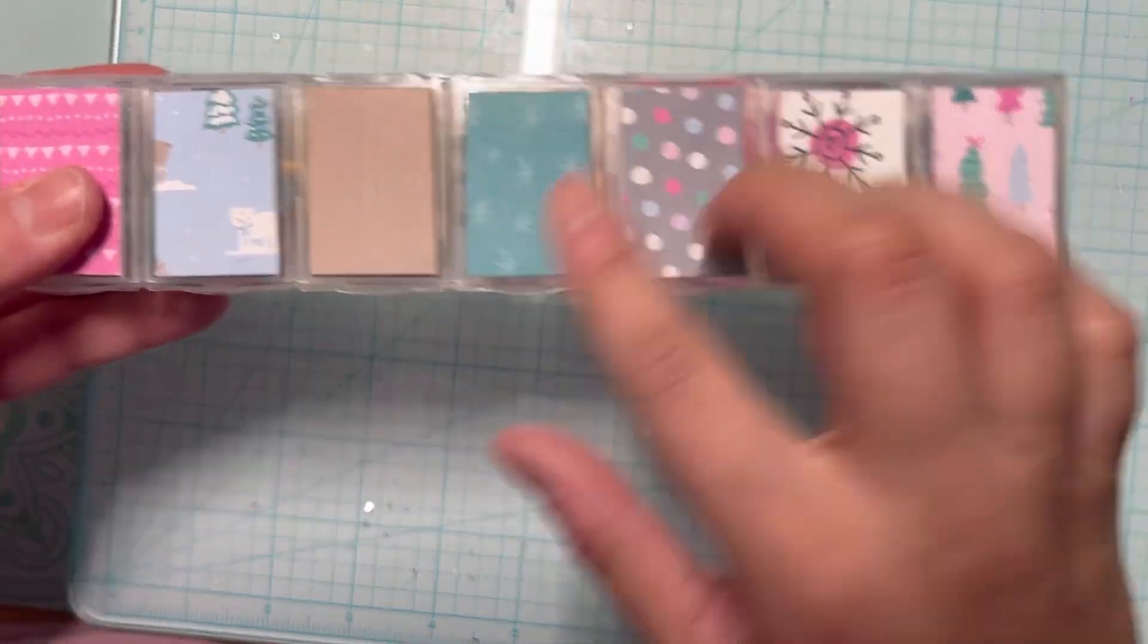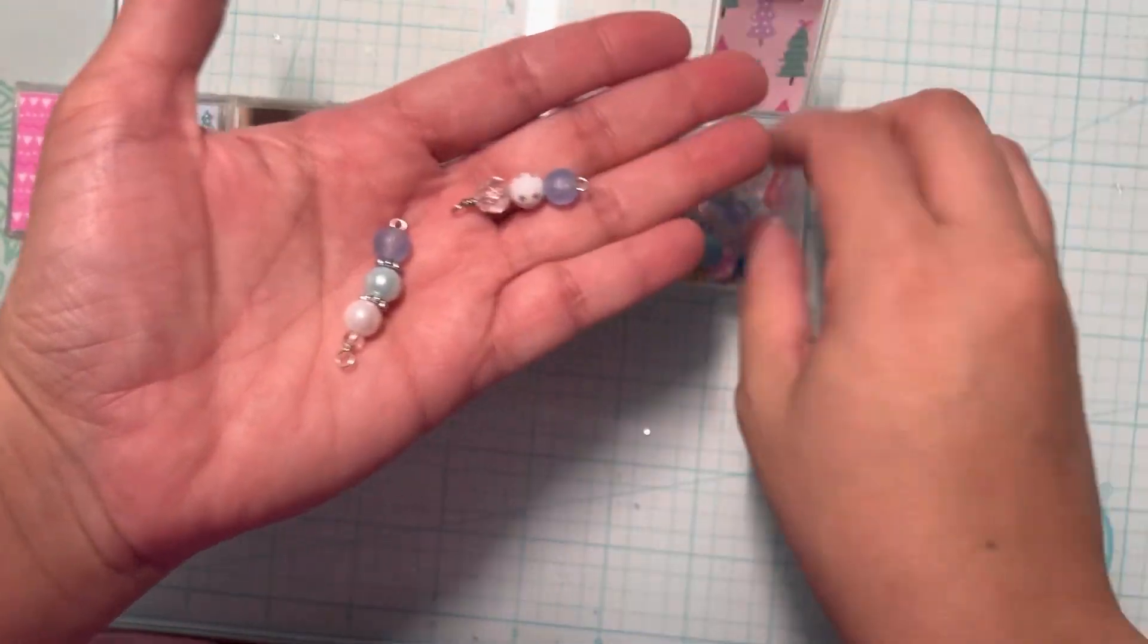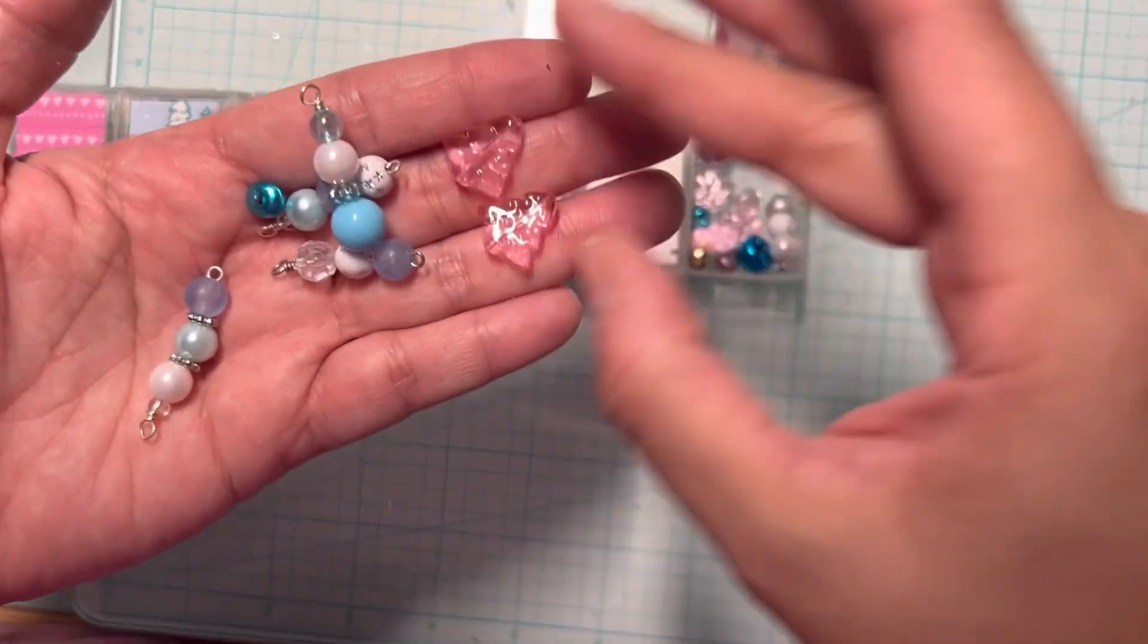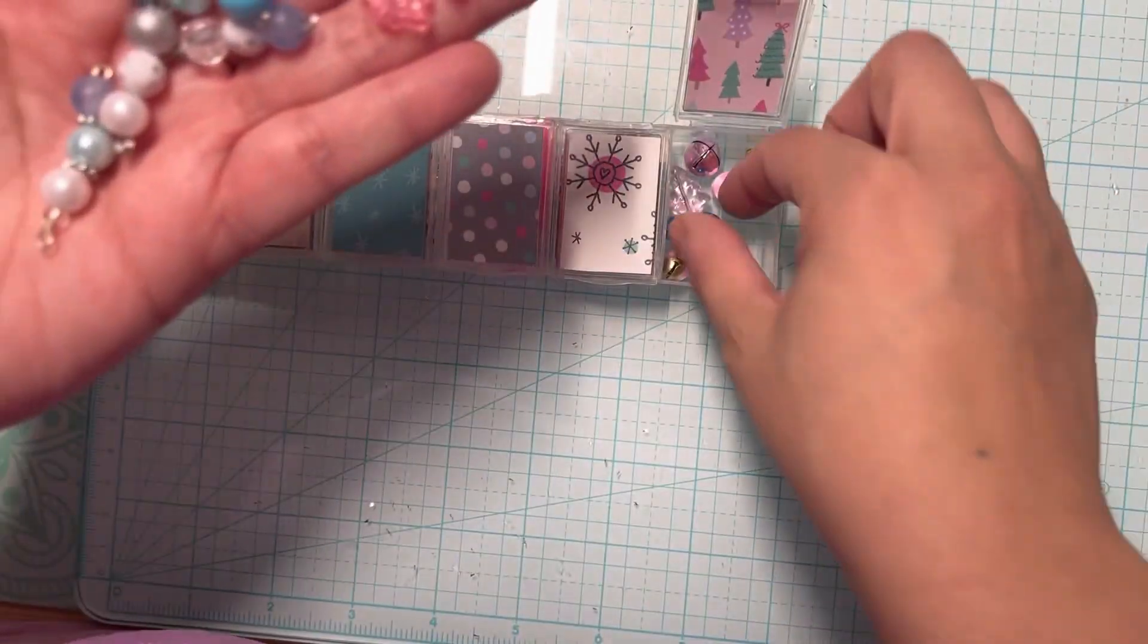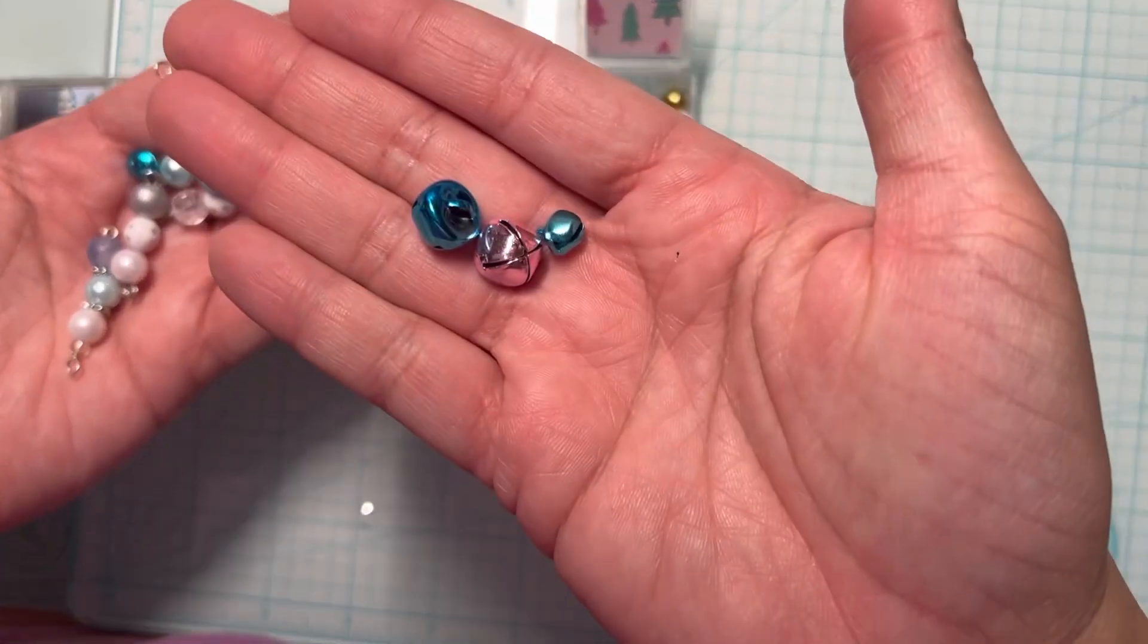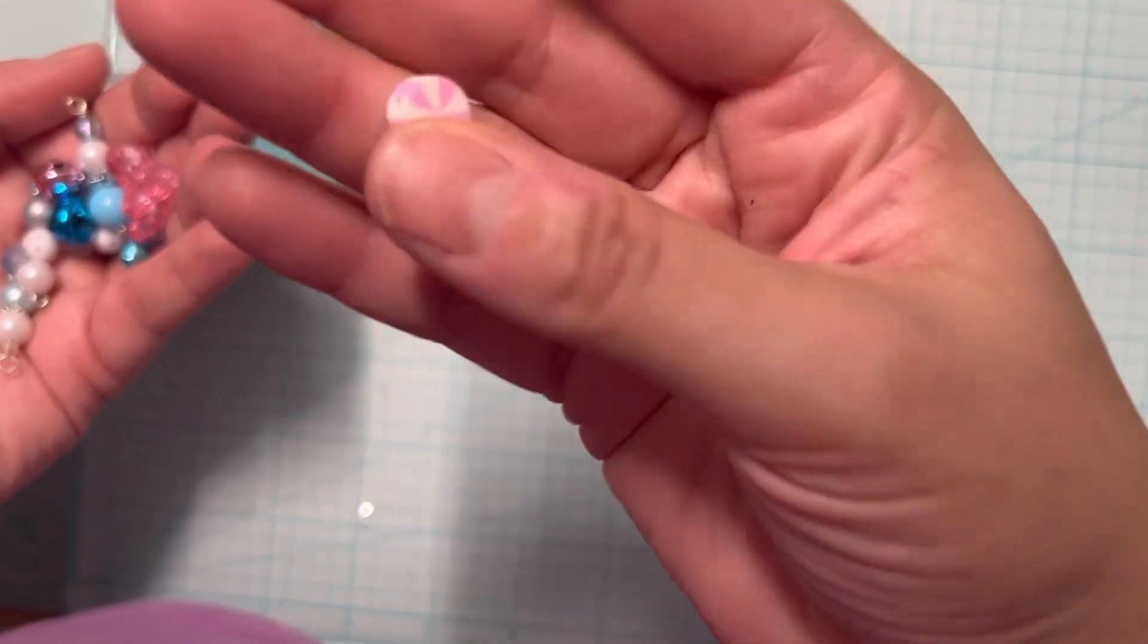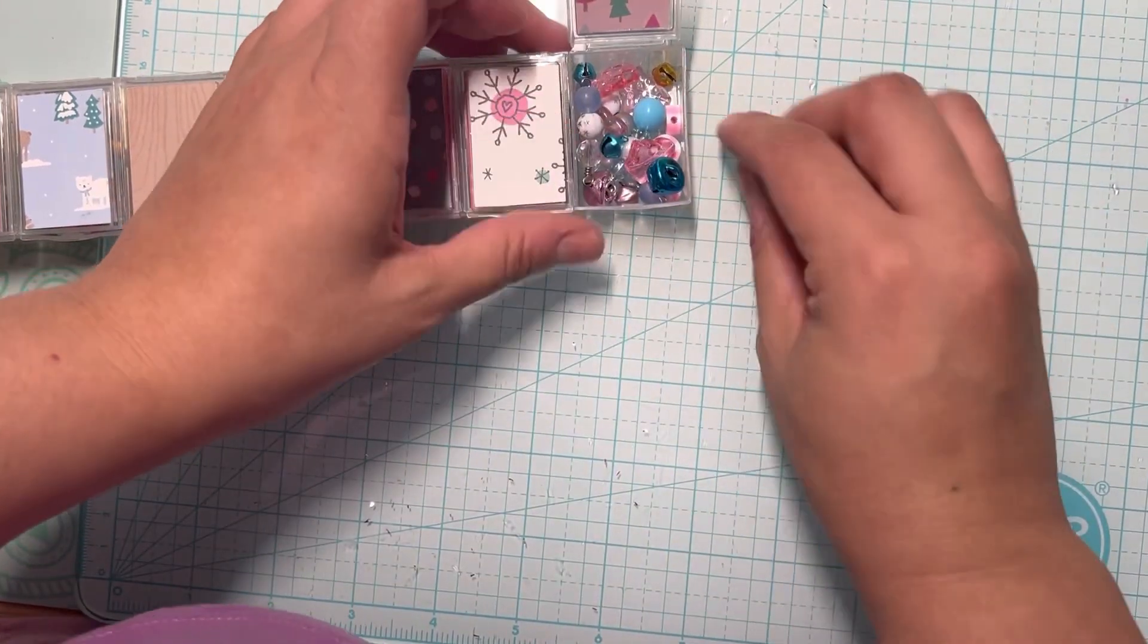And I also decorated it on the inside. So on this compartment we have some wire-wrapped beads, cute little Christmas tree beads, more wire-wrapped beads, some jingle bells in different sizes, and some pink peppermint little clay beads. So that's in the first one.